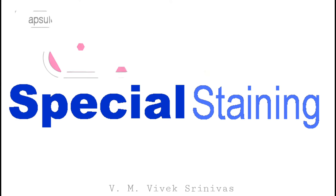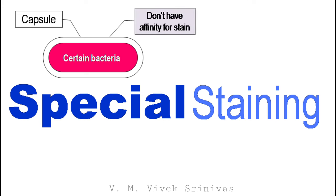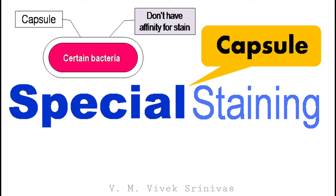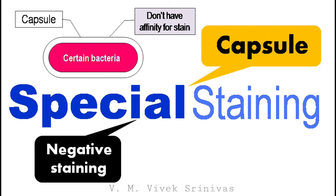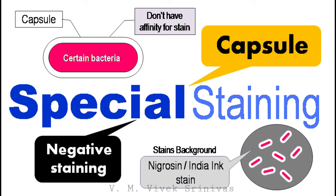Certain bacteria possess a capsule over the cell wall. This capsule does not have affinity for the stain. So the capsule can be demonstrated by the negative staining technique. Here the backgrounds are stained by using nigrosin or india ink stain. So they are called negative staining.